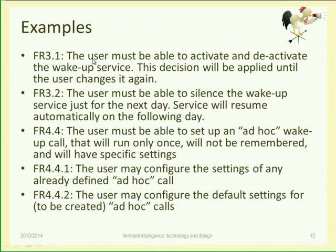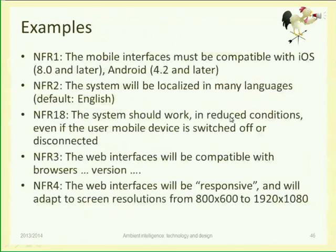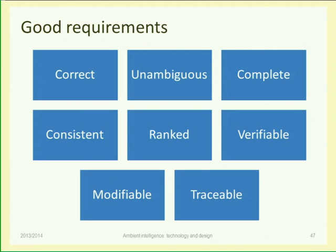We gave examples about what a system can do versus how the system will do it. Functional requirements are mostly local in nature — localized in a function, module, web page, form, or some lines of code — while non-functional requirements are spread all over the application. Now, what help can we have to understand whether the requirements we're writing are actually good?